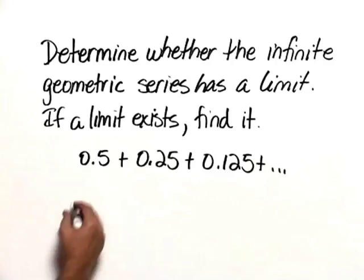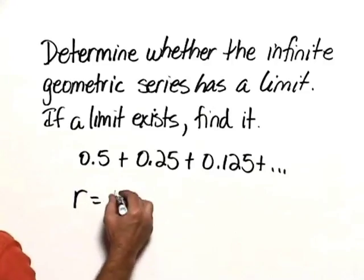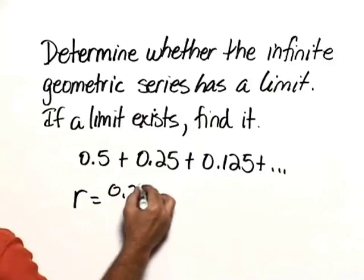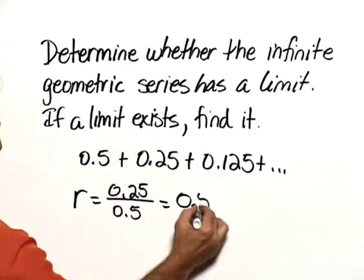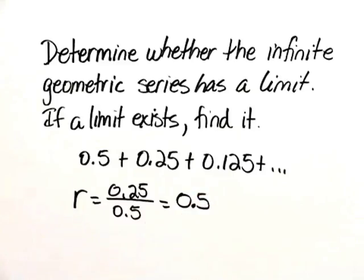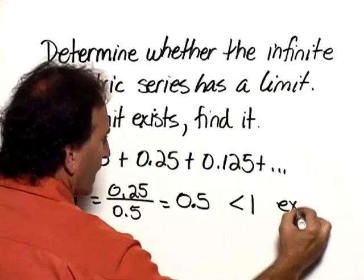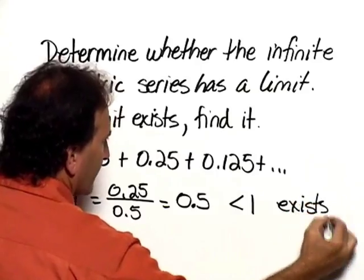So first of all, let's find R, the common ratio. We'll take 0.25 divided by 0.5. That gives us a result of 0.5. Since 0.5 is less than 1, the limit exists.